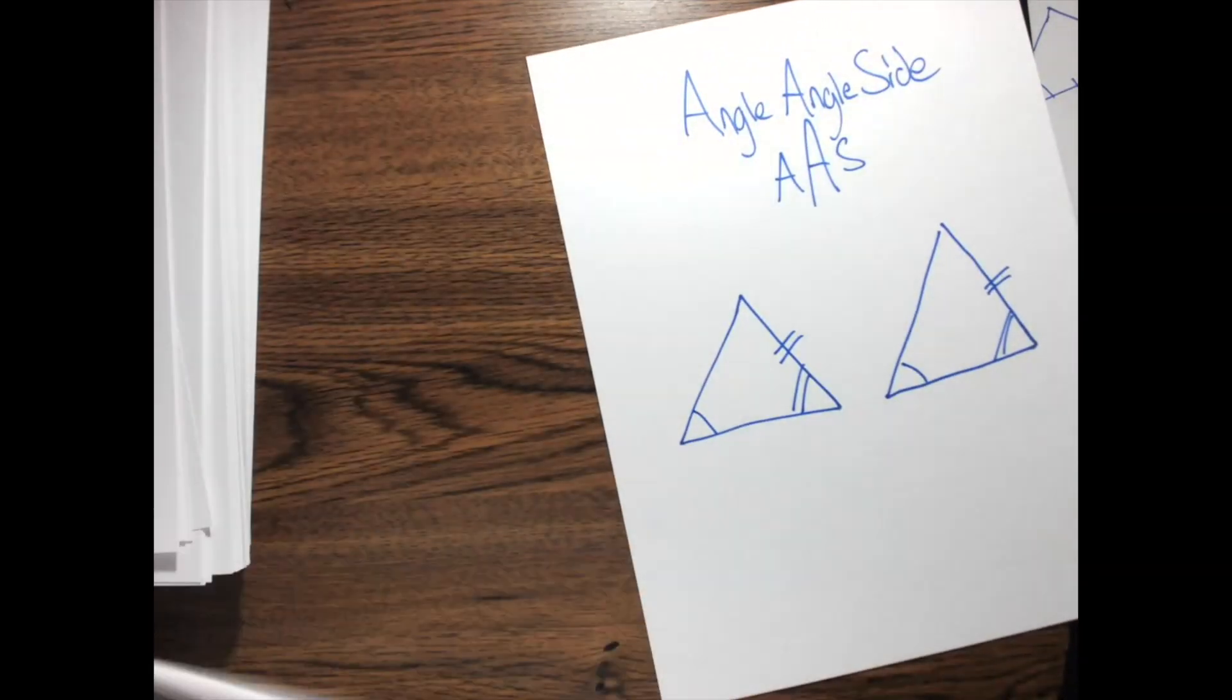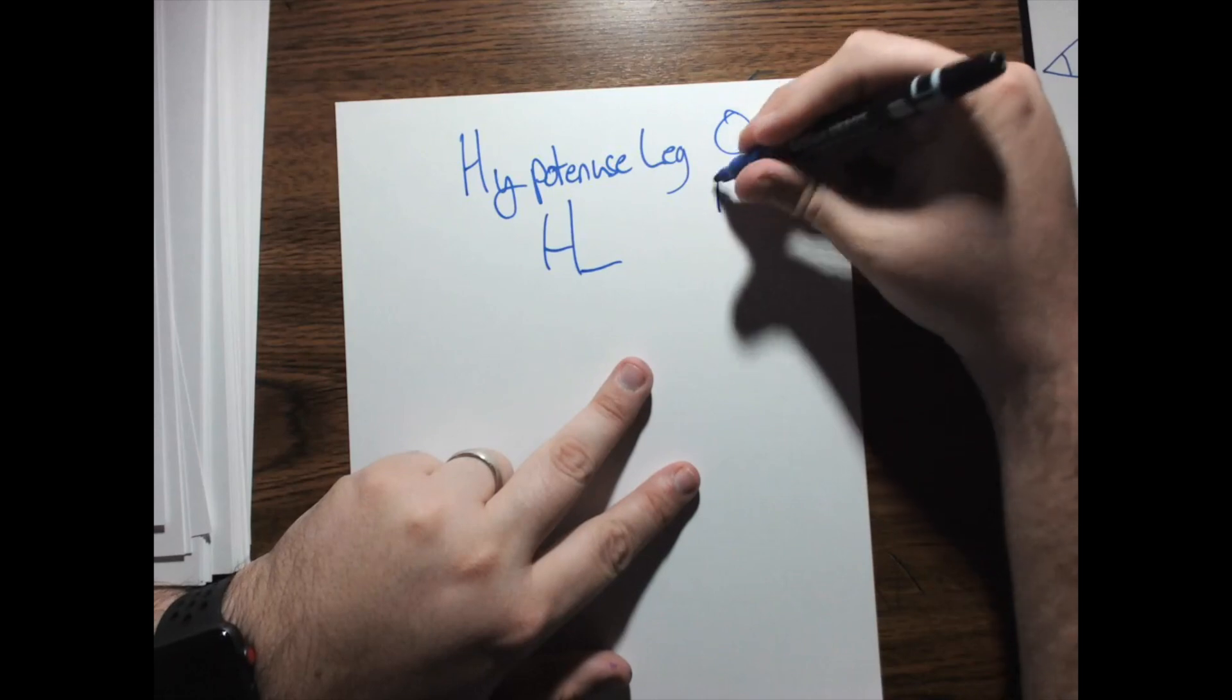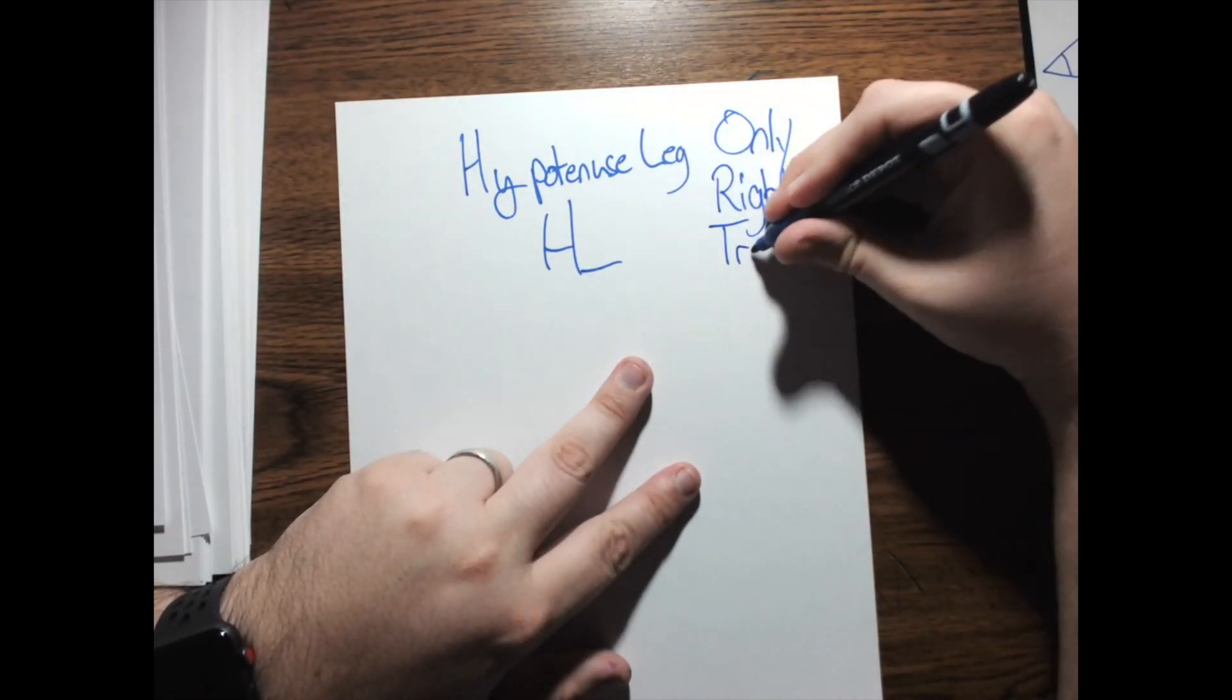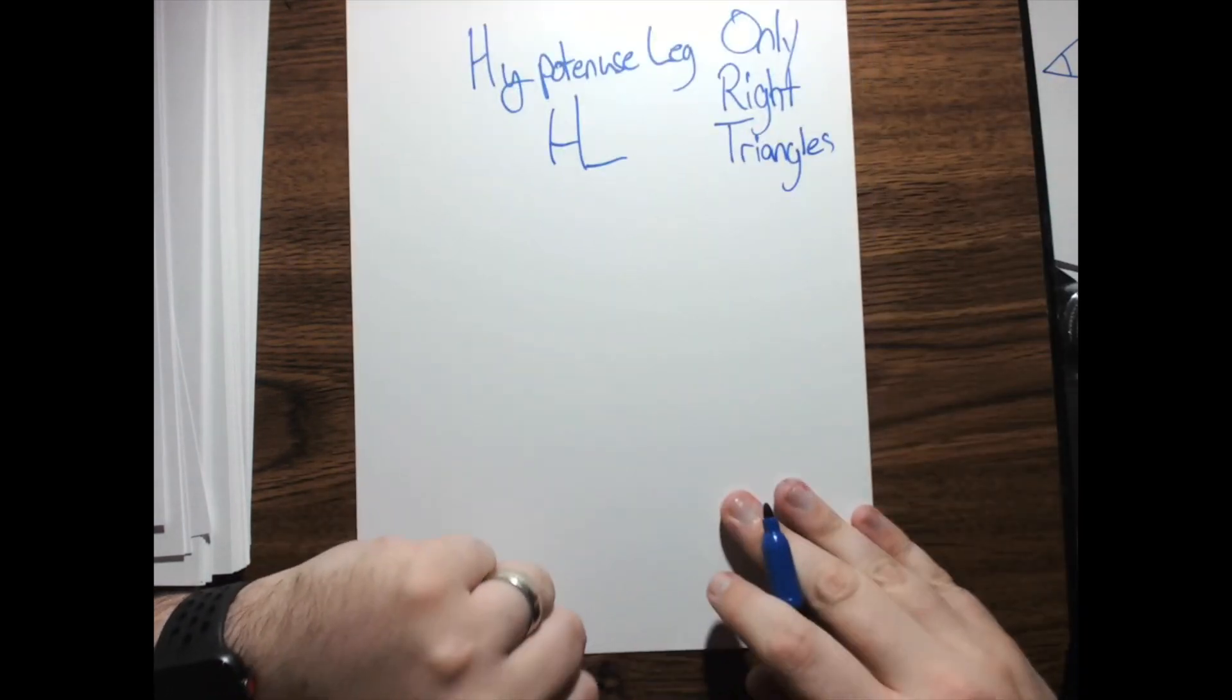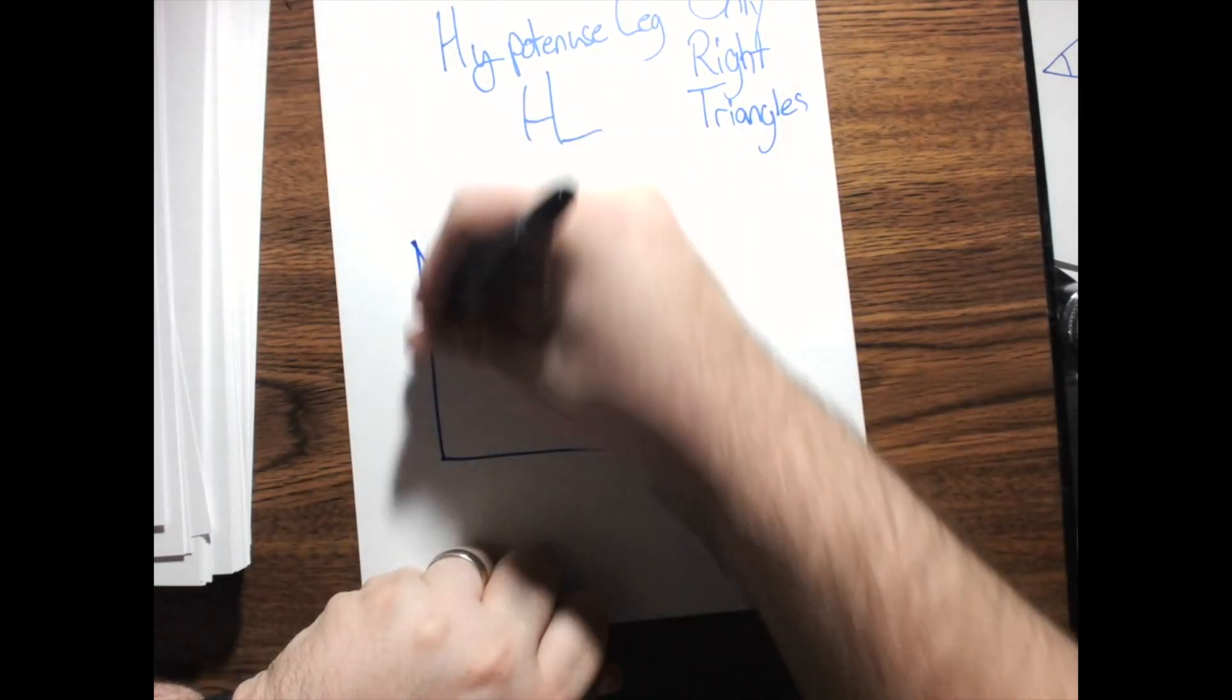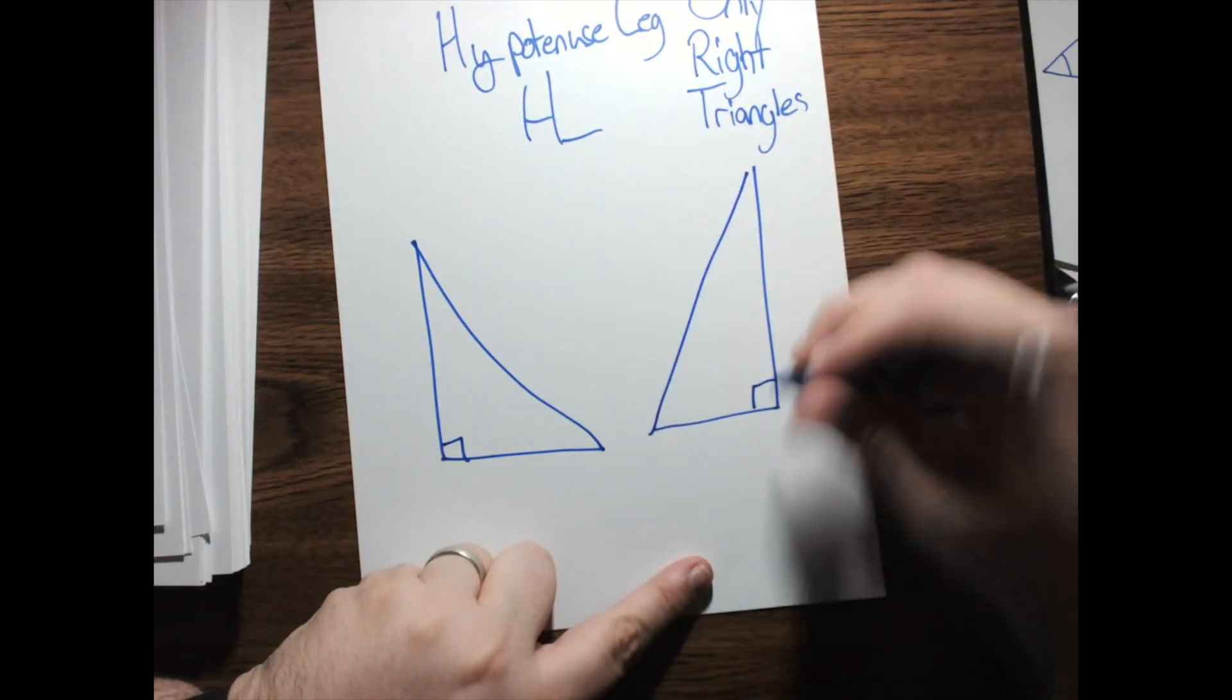Now, that's angle, angle, side. Next, what we're going to talk about is our final congruence theorem. And, this one only works with 90 degree triangles. Only right triangles. And, that is, hypotenuse leg, or HL. So, basically, if I have one right triangle, and then I have a second right triangle...